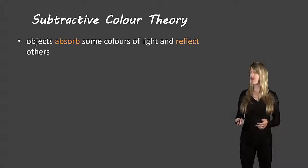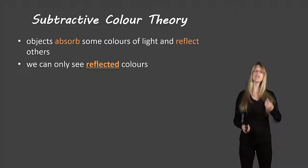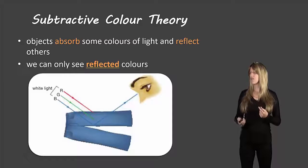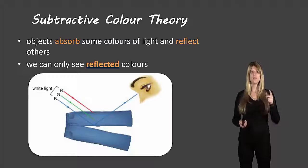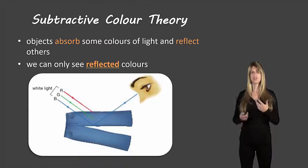Now let's take a look at the subtractive color theory. Objects absorb some colors of light and reflect other colors — we can only see reflected colors. So if a color of light is absorbed, we no longer see that color; it's subtracted from what we're able to see. Here's a picture showing how that happens: white light, made of red, green, and blue, comes toward a pair of jeans. The red and green light are absorbed, so they're subtracted. The blue light is reflected, and since only blue is reflected, that is the color we actually see — so those jeans look blue.